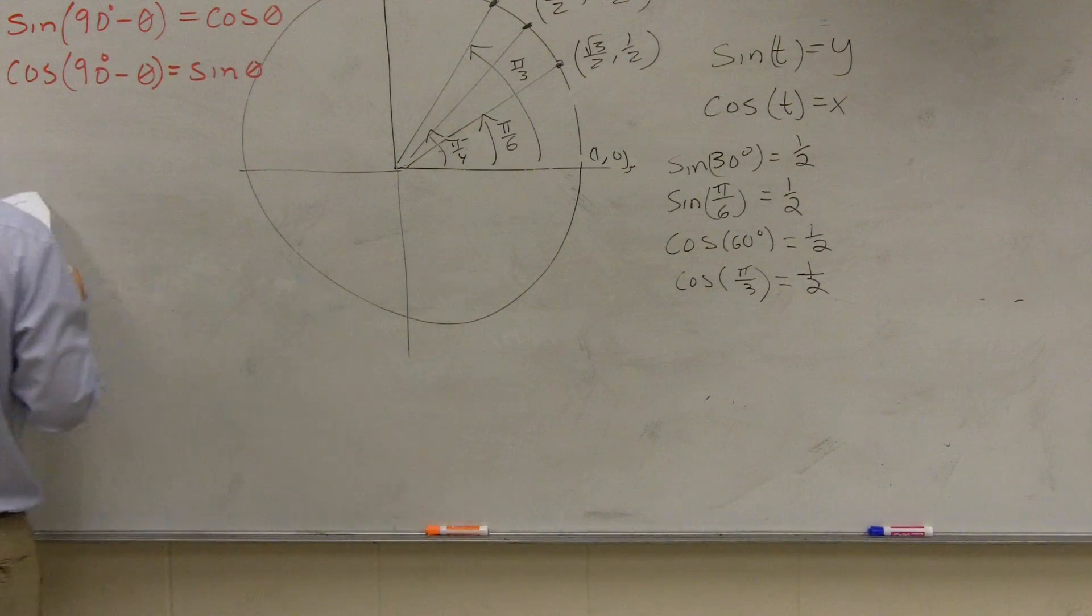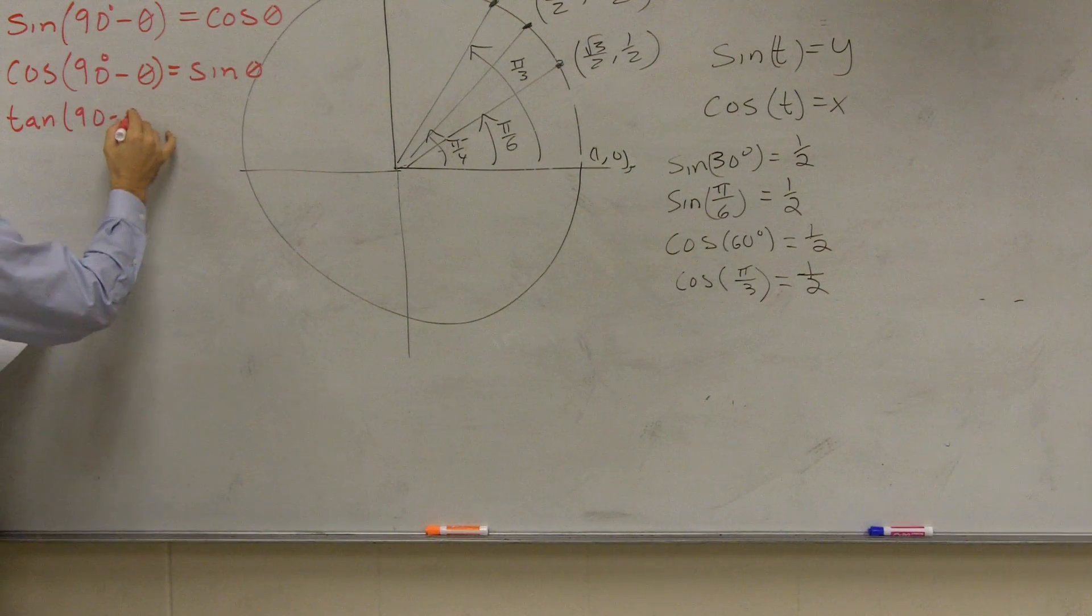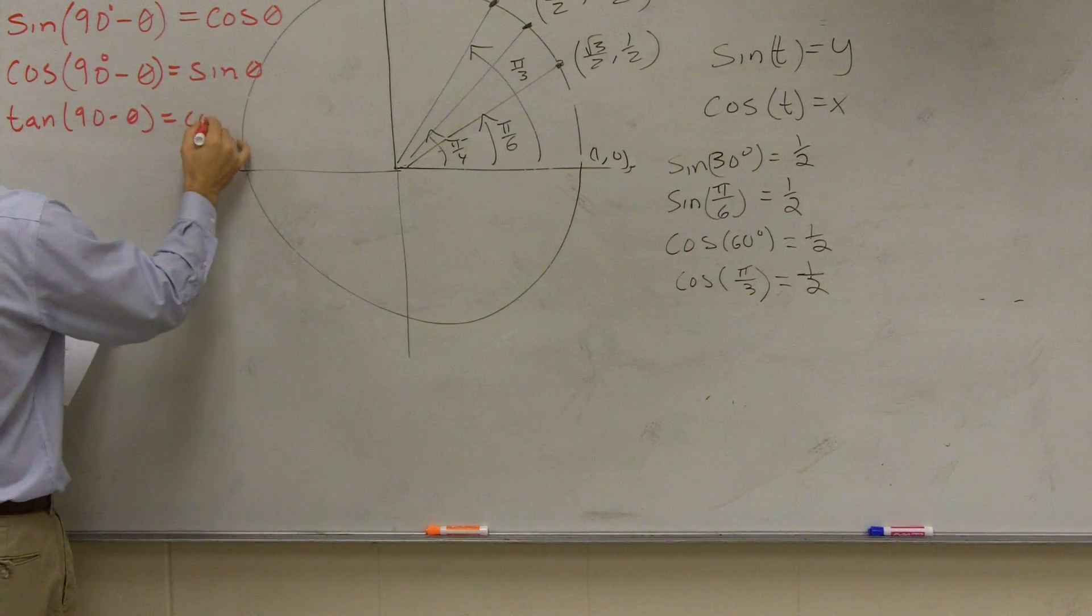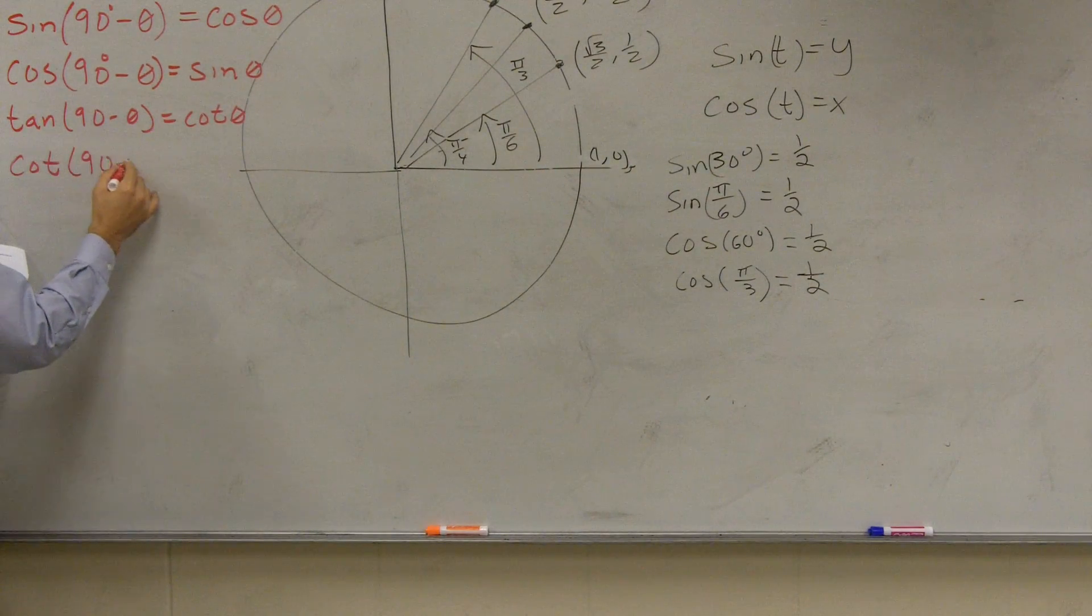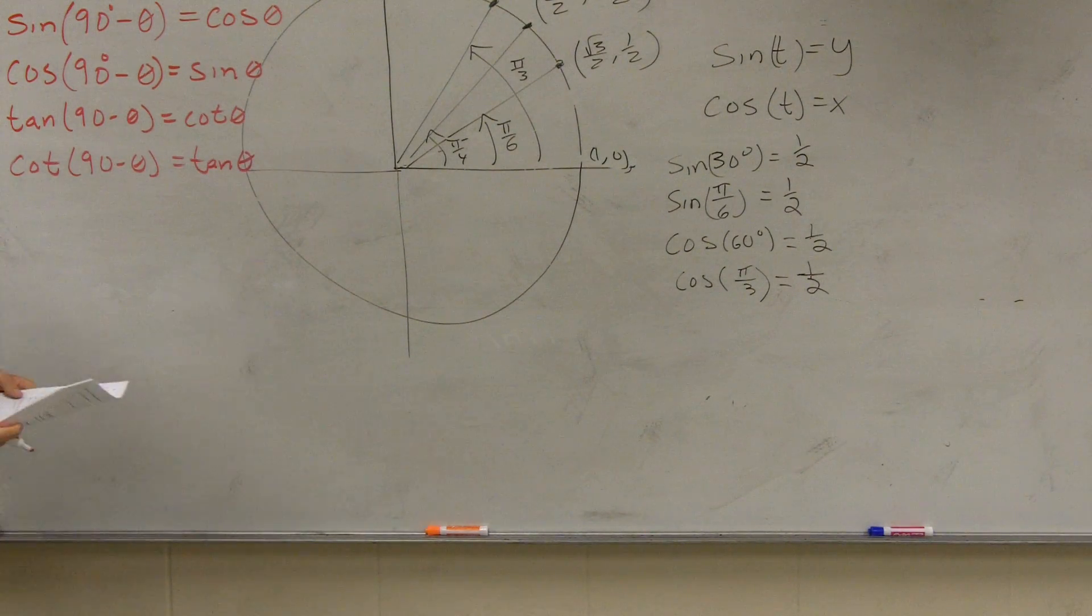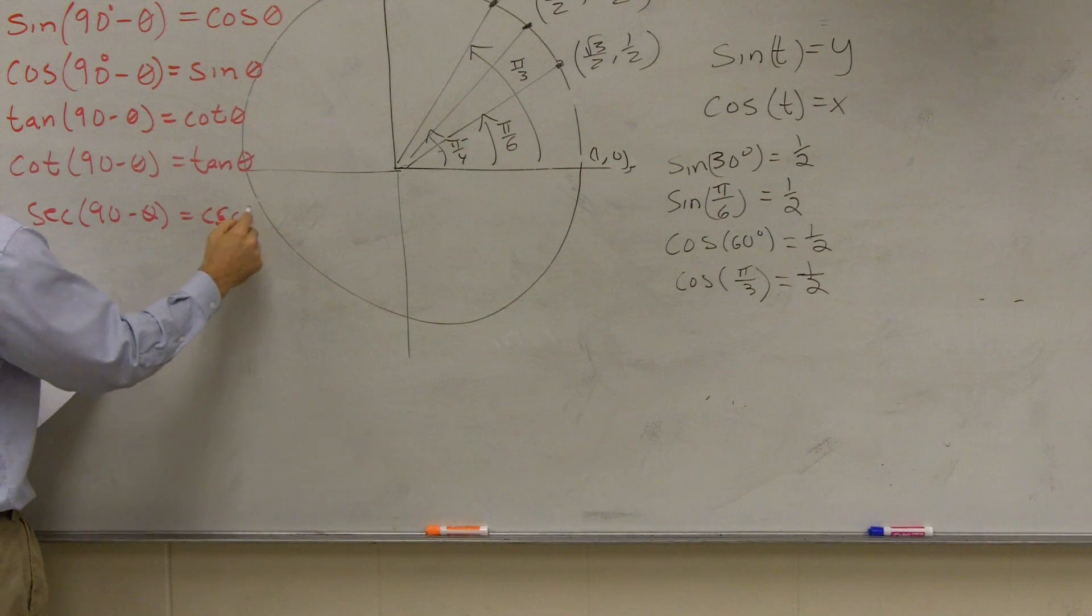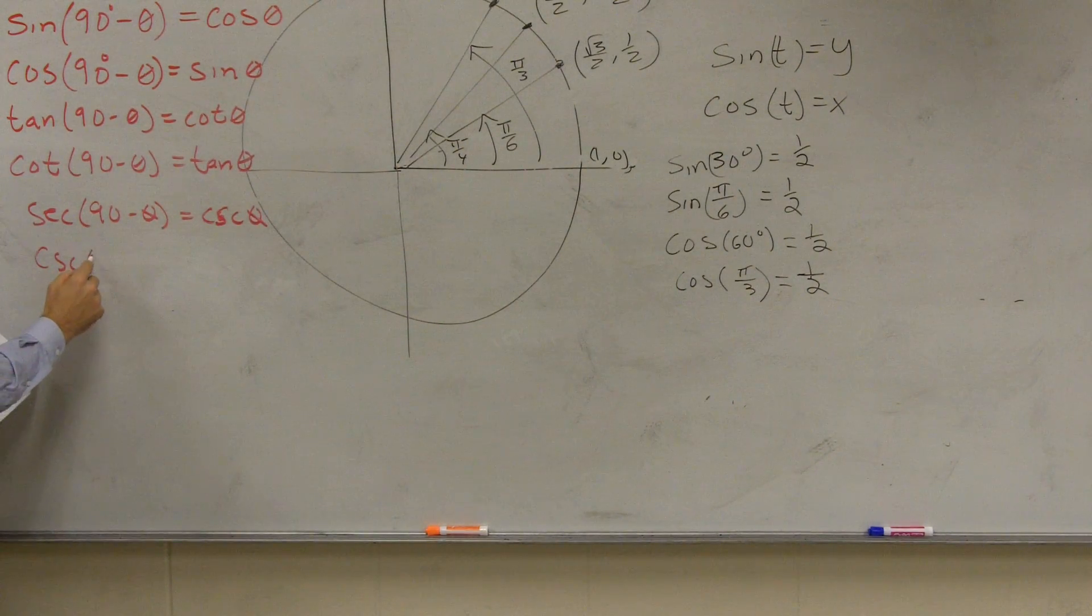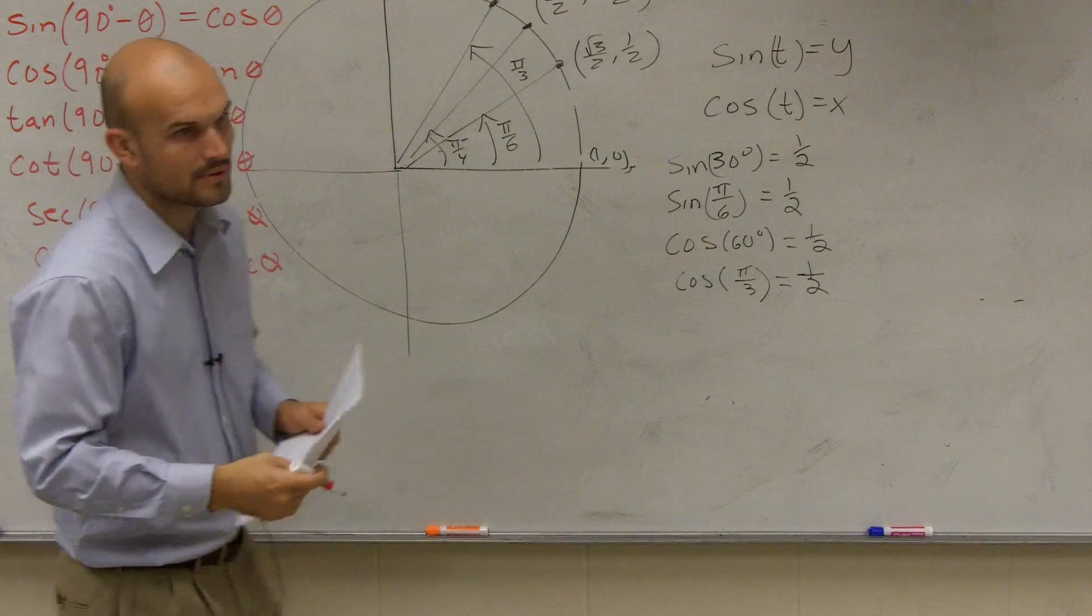So you guys have sine, cosine, and then you guys just need to go through the rest. Tangent of 90 minus theta is equal to cotangent. And cotangent of 90 minus theta is equal to tangent.